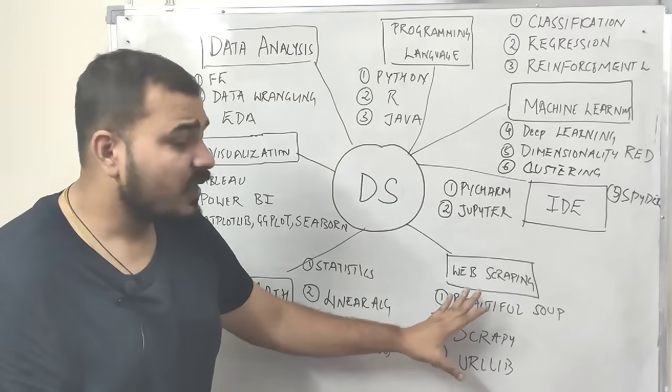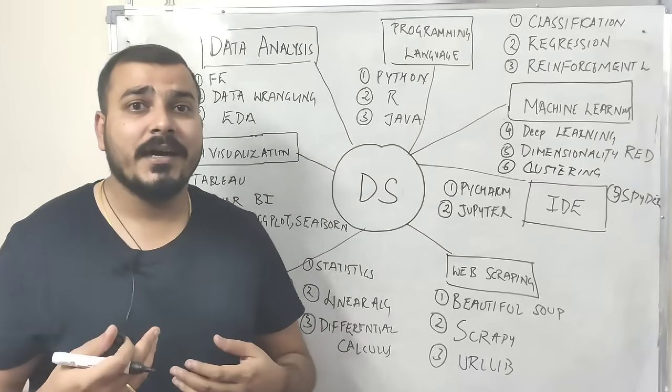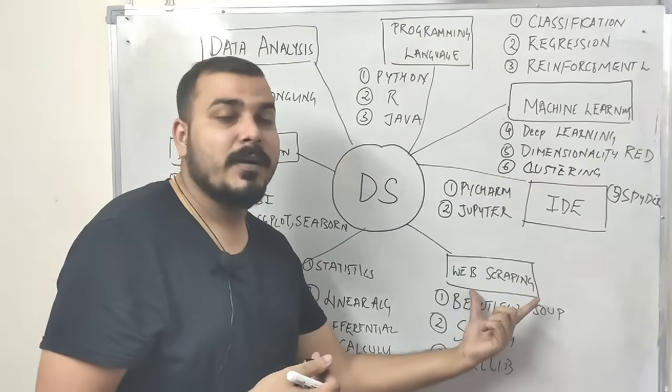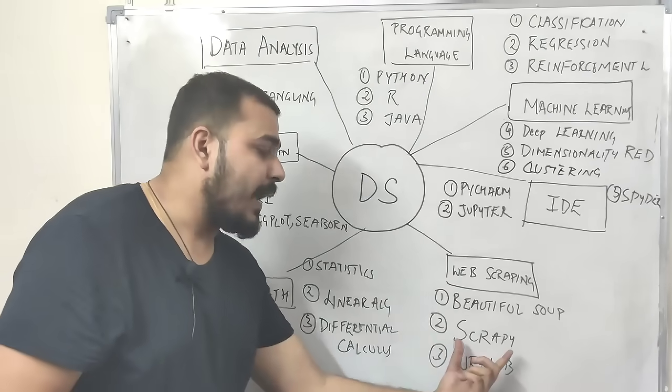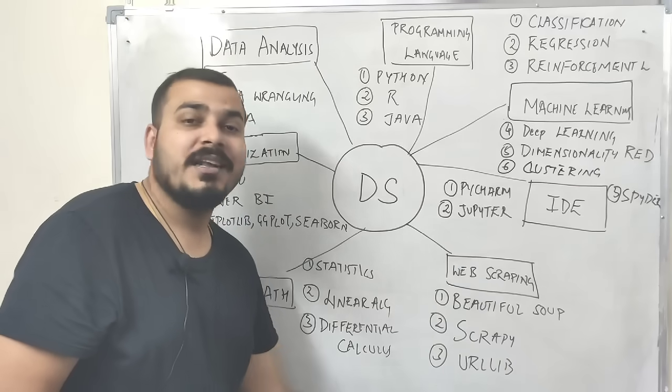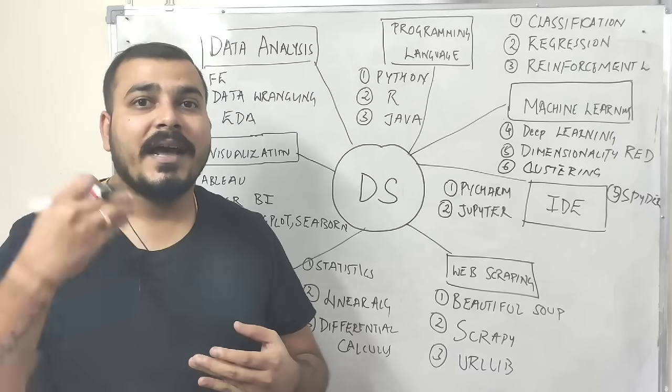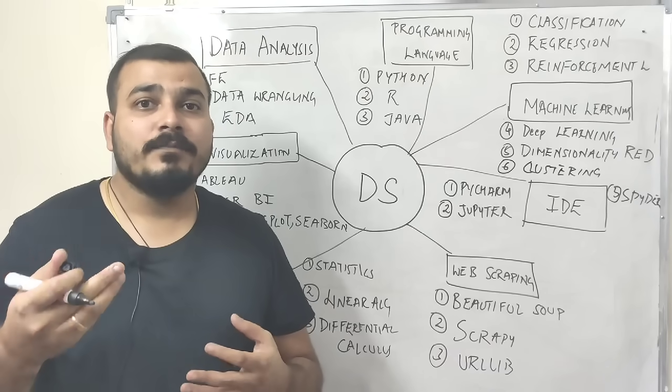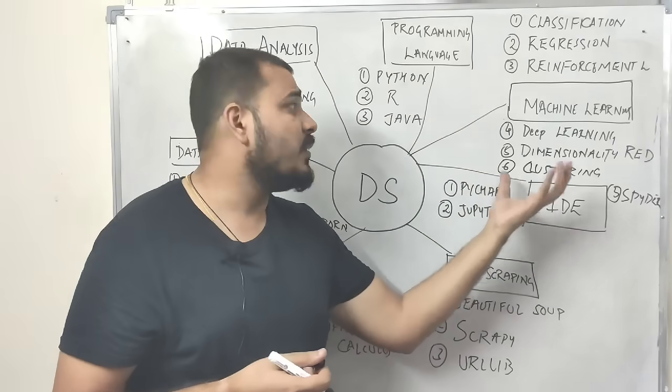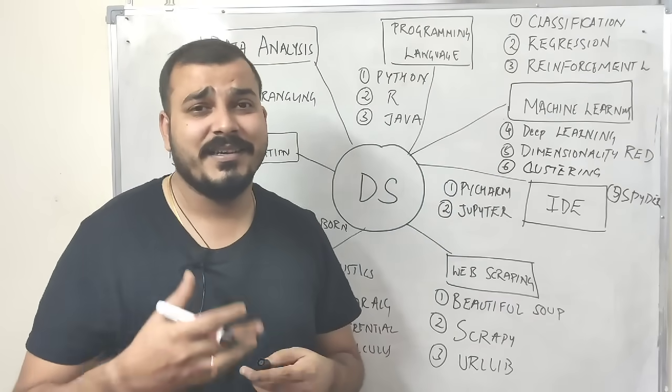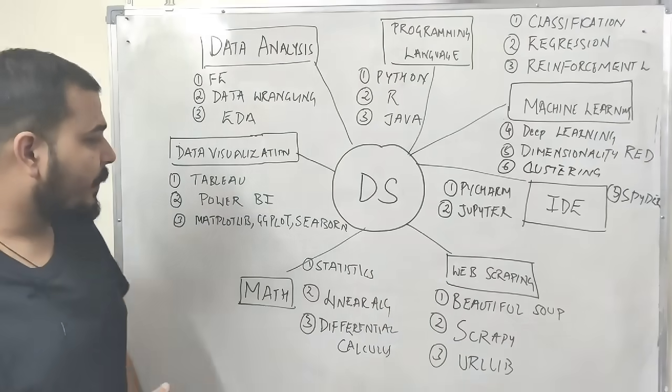Then you need to know web scraping. It's not like you have to know extensively, but in some scenarios where you need to collect data, you'll require web scraping. There are various libraries like Beautiful Soup, a tool like Scrapy, and another library called urllib. This will help you read data directly from some URL in the form of JSON. Apart from that, you have libraries in machine learning like Pandas and NumPy that will also help you.